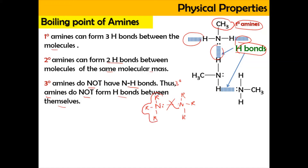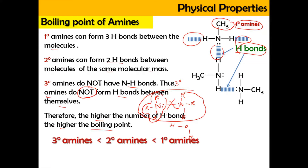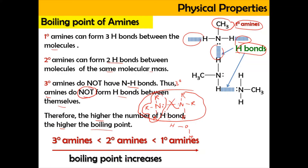However, tertiary amines can form hydrogen bonding with water molecules, but not with themselves. For boiling point, we look at the number of hydrogen bonds: the higher the number of hydrogen bonds, the higher the boiling point, because more energy is needed to break the intermolecular hydrogen bond forces. So primary amines have the highest boiling point, followed by secondary and then tertiary amines.